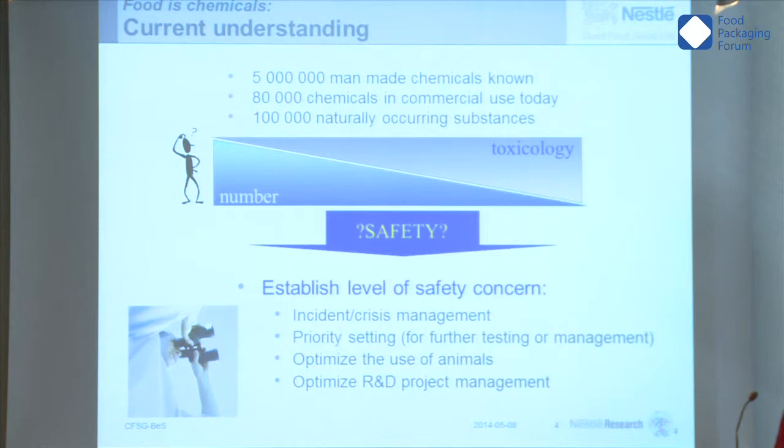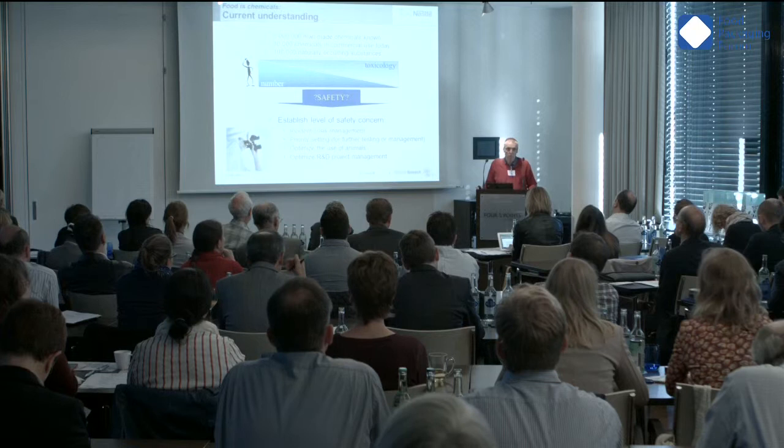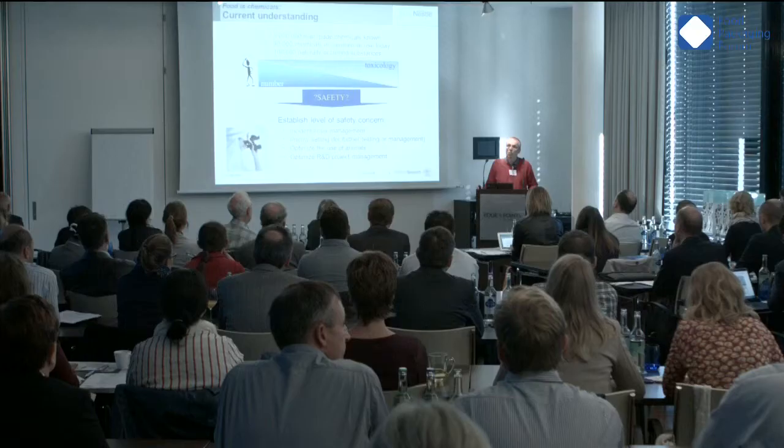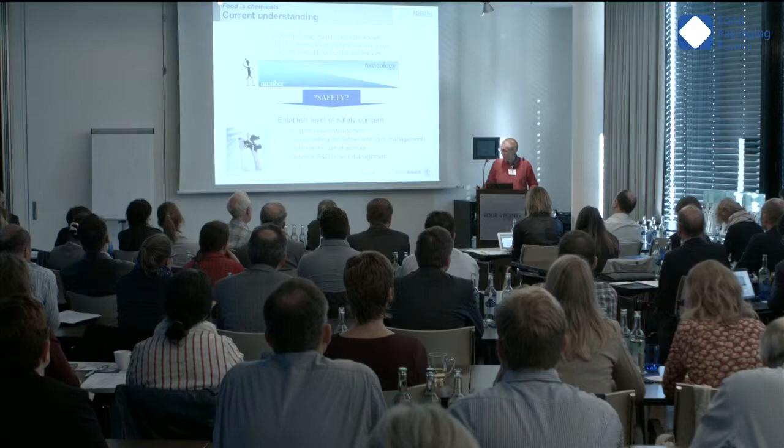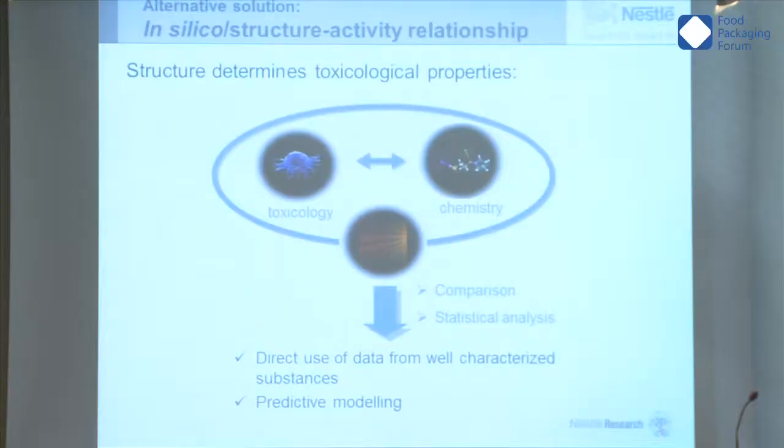There are many of these chemicals, and something important to understand is that for most of the chemicals you find in food, you will have no toxicological data — meaning that if you need to do a risk assessment, you just cannot. Sometimes it's very useful to do a risk assessment, for instance for packaging chemicals. So what to do in such a situation? It's clear that going through a classical approach and testing all chemicals is just not feasible, and in many cases not necessary. Probably the solution is the in silico approach.